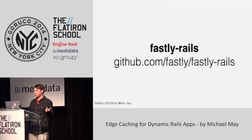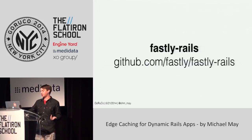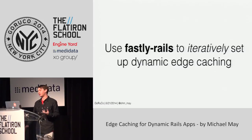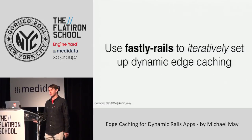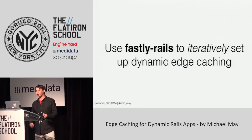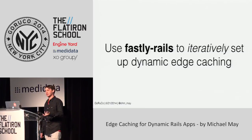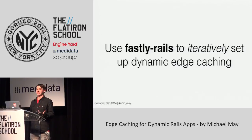Those are the three steps to integrating dynamic edge caching with your Rails app, and all of this is in the Fastly Rails gem. If you decide to do this to your Rails app, the best way is to take an iterative approach and go endpoint by endpoint, controller by controller, just as a way to keep your sanity.